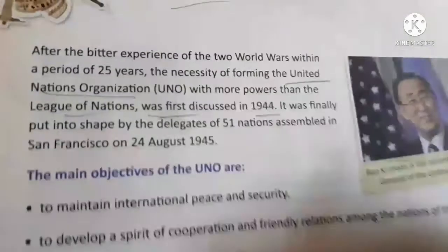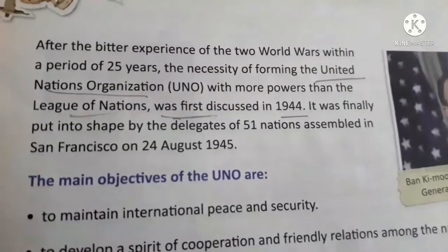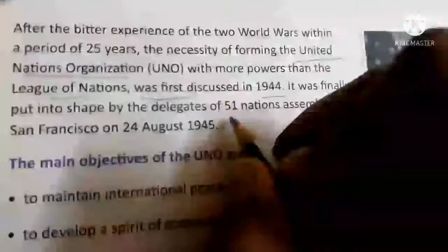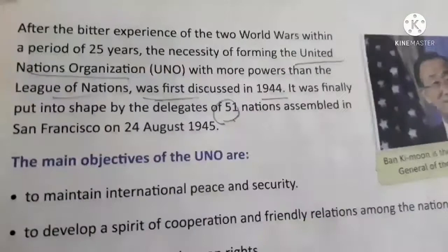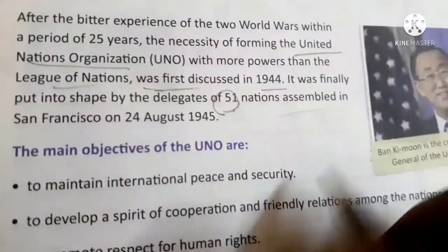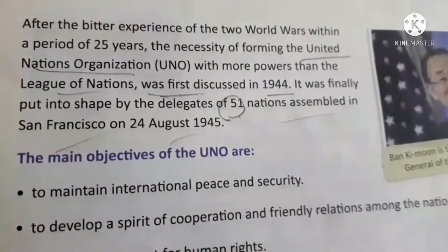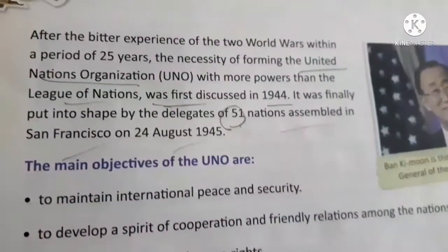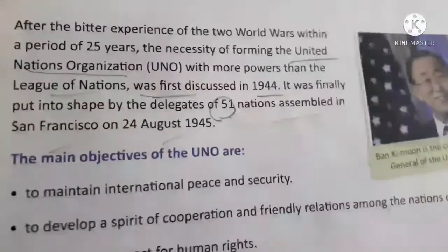So they started another organization called the United Nations Organization. In 1944 the first meeting was held, and finally 51 nations accepted and joined the UN. They all agreed to it in San Francisco on 24th August 1945. The UN has objectives and rules.